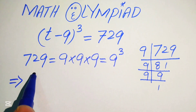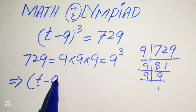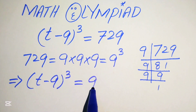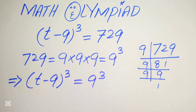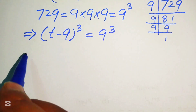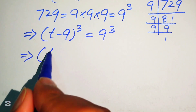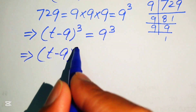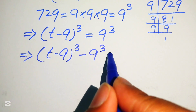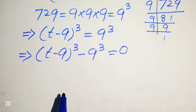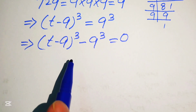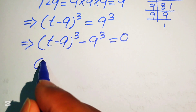We replace 729 with 9 cubed, so it is written as (t - 9)³ = 9³. We move 9 cubed to the left hand side, giving (t - 9)³ - 9³ = 0. Now we need the cubic difference formula.